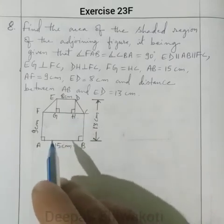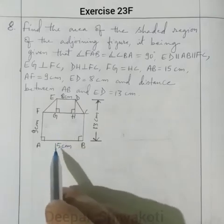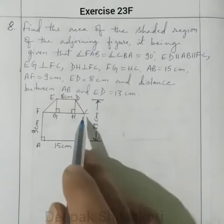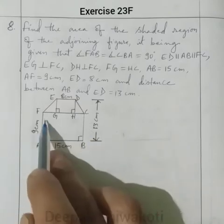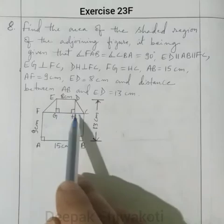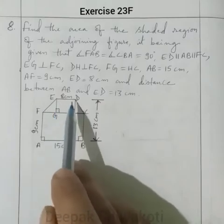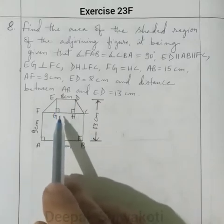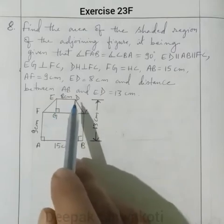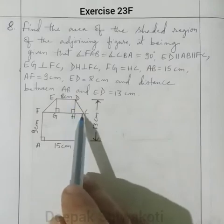First, we will find the area of rectangle ABCF. Then we will find the area of rectangle GHED. And we will also find the area of the two triangles: triangle EGF and triangle DHC. These two triangles appear to be congruent.